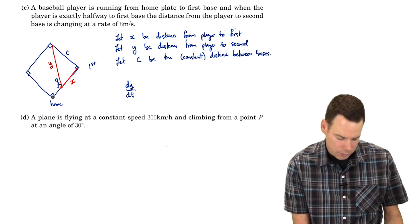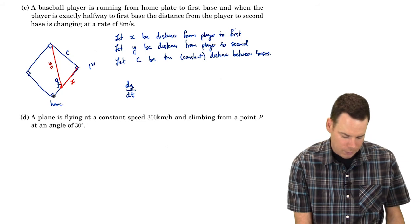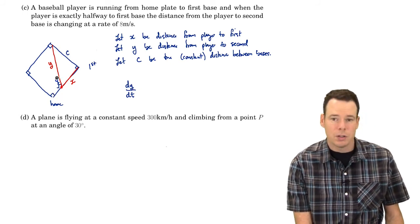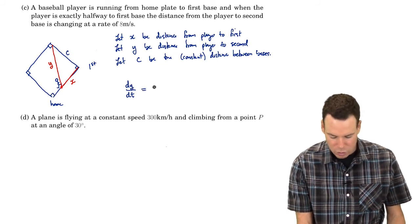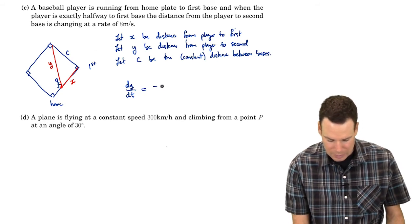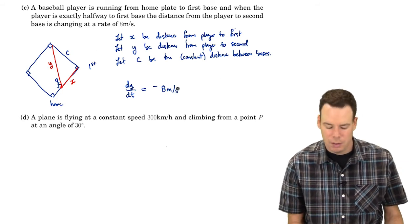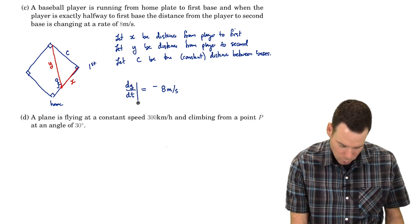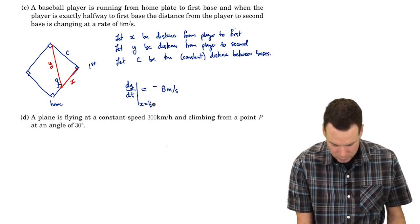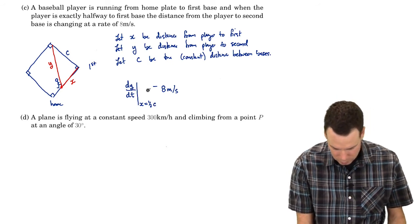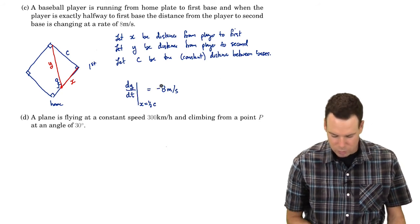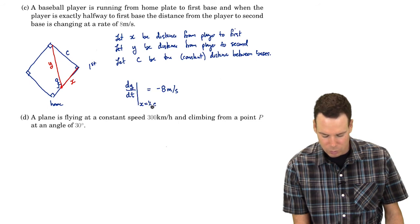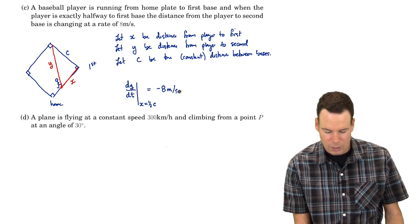The distance from the player to second base is changing, so dy/dt equals 8 meters per second — but we need to think about the sign. When the player is at home plate, the distance to second is large, but as the player moves toward first base they get closer to second. So y is shrinking, meaning the rate of change is negative: dy/dt equals negative 8 meters per second. Furthermore, this only holds at the precise moment when x equals one-half c, so dy/dt evaluated at x = c/2 equals negative 8 meters per second.